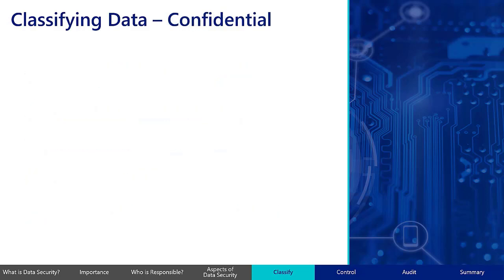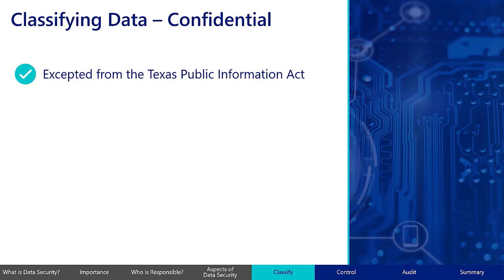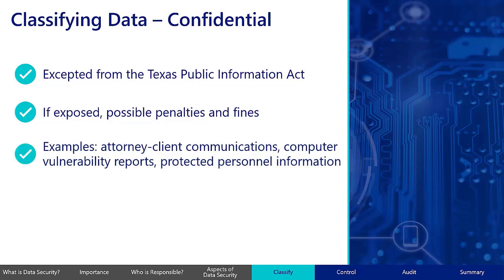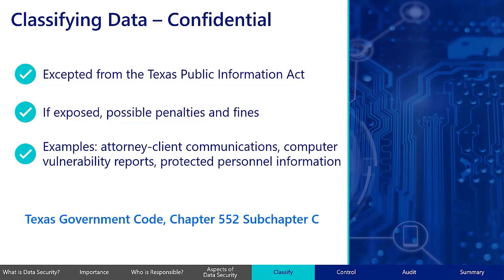Confidential data is information that is typically excepted from the Public Information Act. If this data is exposed, the organization responsible can face negative ramifications, including penalties or fines. Some examples of confidential data include attorney-client communications, computer vulnerability reports, and protected personnel information. A comprehensive list and description of the exceptions to disclosure can be found in the Texas Government Code, Chapter 552, Subchapter C.